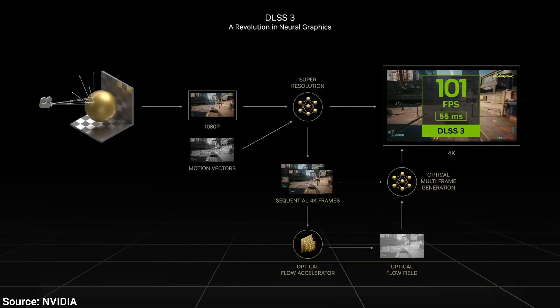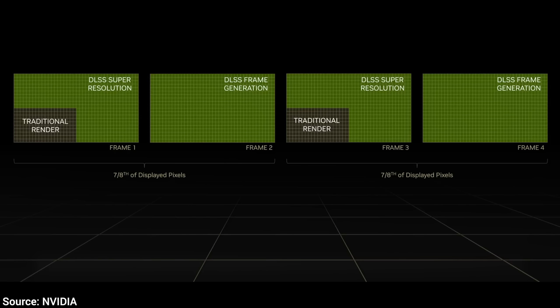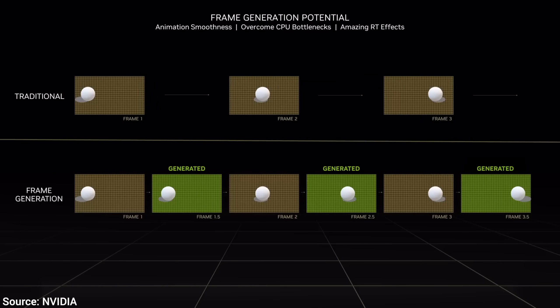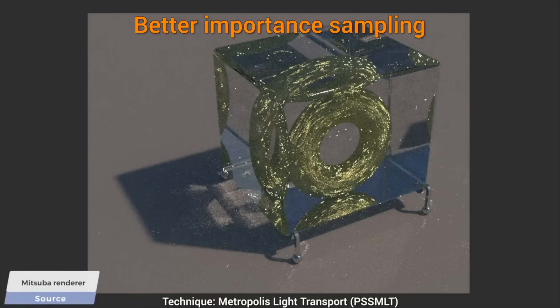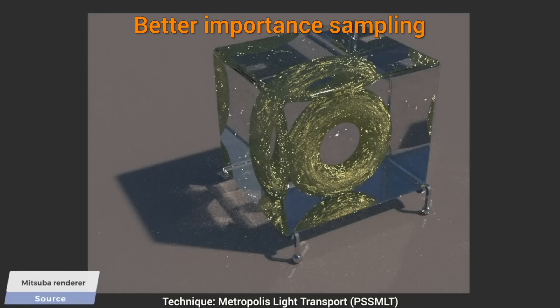So how? Well, as of DLSS version 3 — get this — by generating seven out of every eight pixels that appear on the screen. Yes, more than 85 percent of the pixels are just generated, not computed by, for instance, ray tracing or traditional techniques. Yes, that sounds flat out impossible.